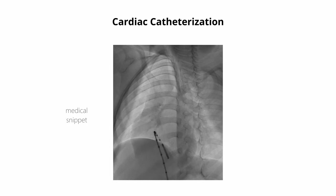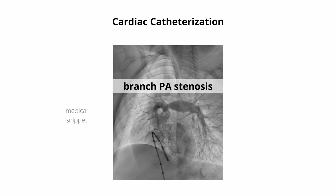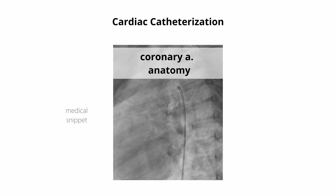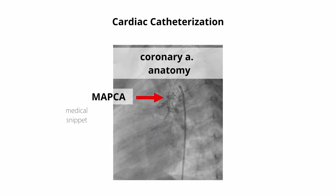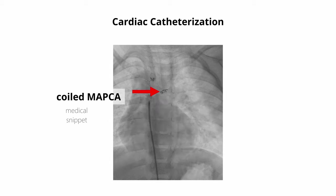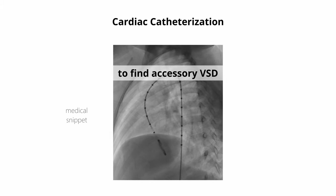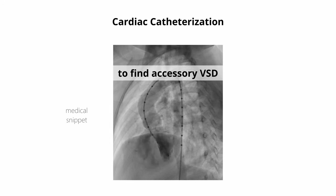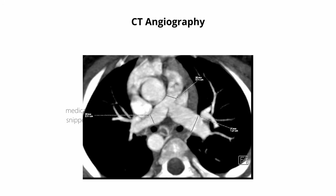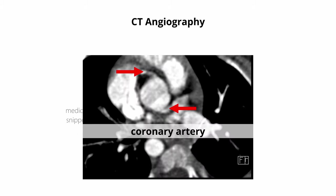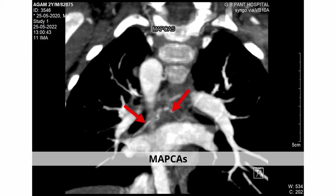Cardiac catheterization is done to find branch pulmonary stenosis, study coronary artery anatomy, and to identify and treat major aortopulmonary collateral arteries, and also to find any accessory VSDs. Similarly, CT angiography can be performed to study branch pulmonary artery, coronary artery, and major aortopulmonary collateral artery anatomy.